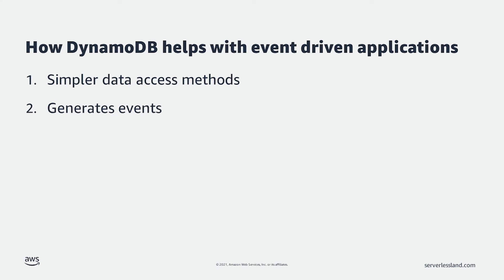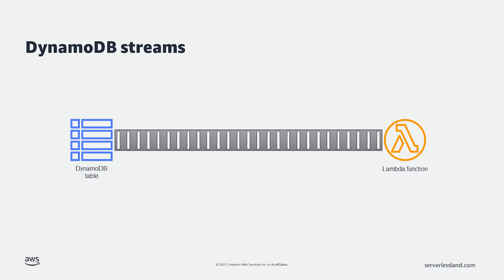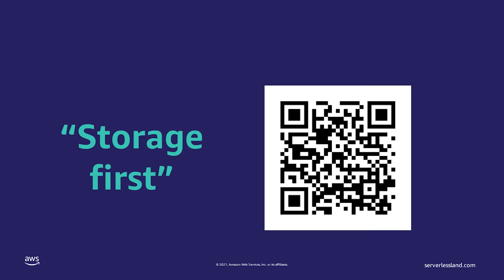DynamoDB also works well in event-driven applications because it can generate events when data is added, modified, or deleted from the database. As a developer, you can activate DynamoDB Streams. The stream contains a record of each activity in the database. These events can be consumed by a Lambda function to apply business logic or trigger other processes within the application. This pattern is what I call the storage-first pattern. To learn more about this pattern and see how it adds stability to an application, follow the QR code on the screen.